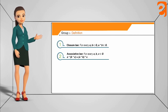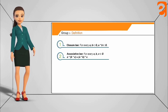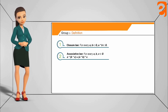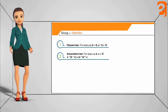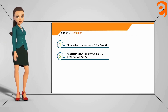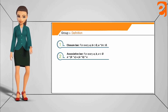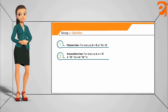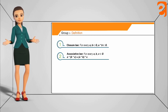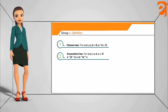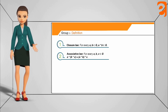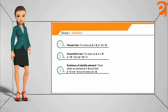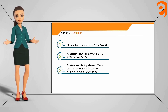The associative law means that whether you first apply the operation to b and c, then apply the result with a, or first take the binary operation of a and b and then apply it with c, both sides — left-hand side and right-hand side — should be the same. The third property is called the existence of an identity element.